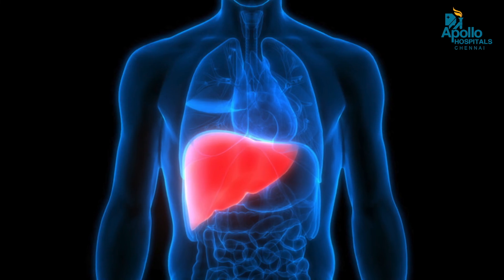Fatty liver is fat getting deposited in the liver. The first thing that happens is the cells get enlarged because of the fat. People generally go for an ultrasound and come to our clinic saying the liver is enlarged and they have fatty liver. This initial stage is when fat gets stored in the hepatocytes, which are the liver cells, and the liver itself becomes fatty.